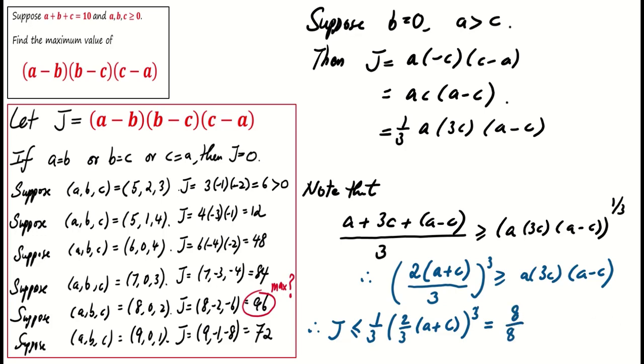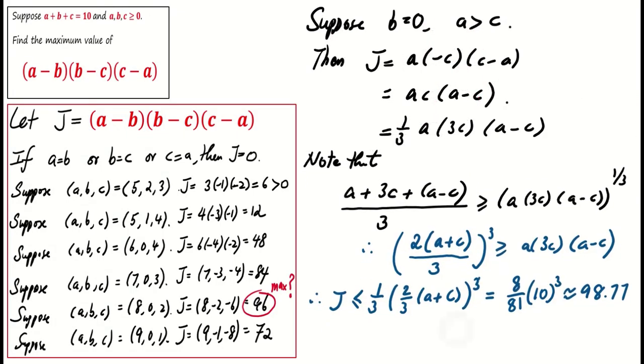But does this mean that the maximum value of J is 98.77? Checking the equality reveals that the equality holds if and only if a equals 3c equals (a minus c), which means that a equals c equals zero, which obviously leads to a contradiction. Therefore, J is strictly less than 98.77.